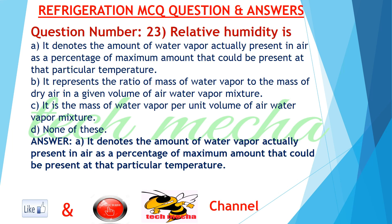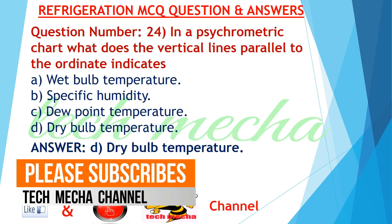Question number 23: Relative humidity is A. it denotes the amount of water vapor actually present in air as a percentage of maximum amount that could be present at that particular temperature, B. it represents the ratio of mass of water vapor to the mass of dry air in a given volume of air-water vapor mixture, D. none of these. Answer: A. it denotes the amount of water vapor actually present in air as a percentage of maximum amount that could be present at that particular temperature.